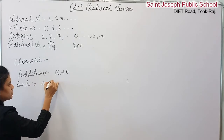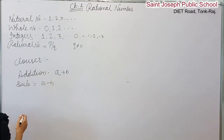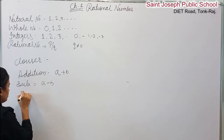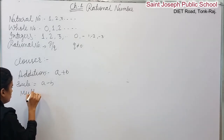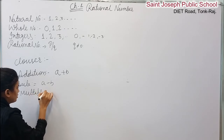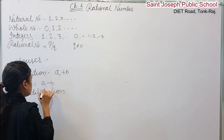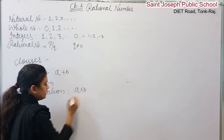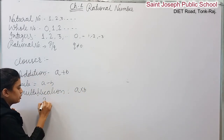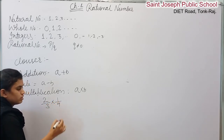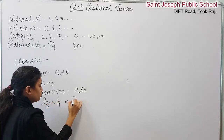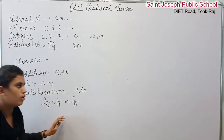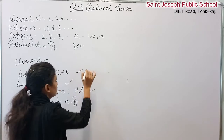Now we are going to see multiplication under closure property. For multiplication, take 2 by 3 multiplied by 1 by 4. So 2 times 1 is 2 upon 3 times 4 is 12 — wait, 2 upon 8. We get a rational number, so closure is satisfied for multiplication.